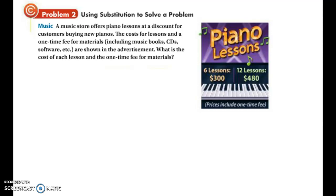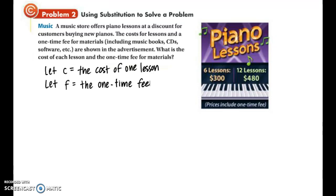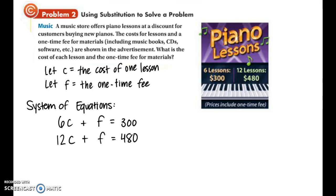In example two, we're given a real-life application problem where we can use substitution to solve. A music store offers piano lessons at a discount for customers buying new pianos. The costs for lessons and a one-time fee for materials, including music books, CDs, software, etc., are shown in the advertisement. What is the cost of each lesson and the one-time fee for materials? Let C stand for the cost of one lesson and F stand for the one-time fee. Our first equation is 6C plus F equals 300, because you are taking six lessons and paying a one-time fee included in that $300. Similarly, for 12 lessons and a one-time fee, you're paying $480, so the second equation is 12C plus F equals 480.